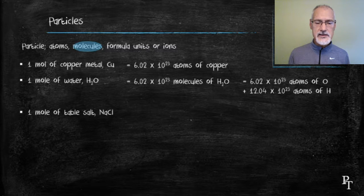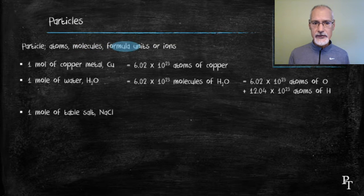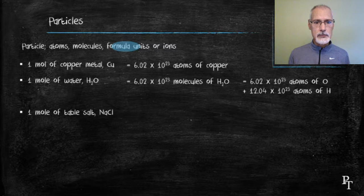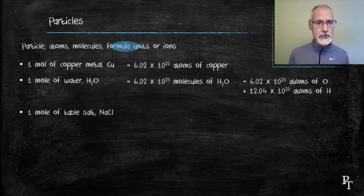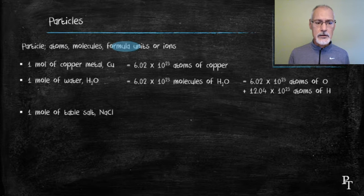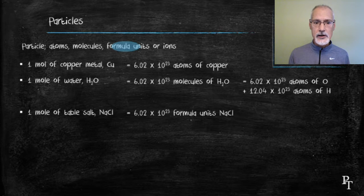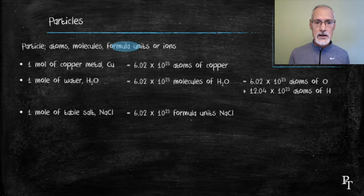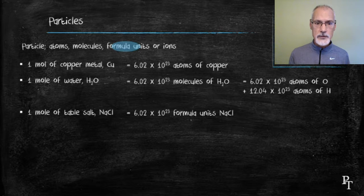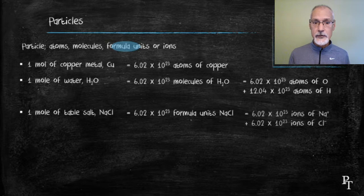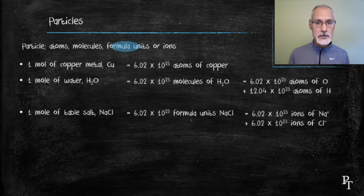If I want to consider 1 mole of table salt, NaCl. Sodium chloride isn't a molecule, but an ionic substance. And ionic substances are made of things called formula units. So don't confuse a formula unit with a molecule. So, if I had 1 mole of table salt, I would have 1 mole of sodium chloride formula units. They themselves would be made up of 1 mole of sodium ions and 1 mole of chloride ions.